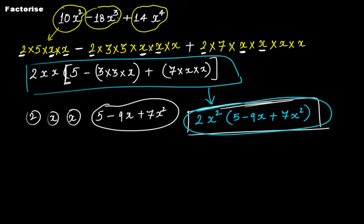In this algebraic expression, you notice that it has three terms. When you break this term into its irreducible factor form, that is 2 multiplied by 5 multiplied by x multiplied by x. In the same way, it is 2 multiplied by 3 multiplied by 3 multiplied by x, x, x. Here you have 2, 7, x, x, x, x. The factor 2 is common in all these three terms.